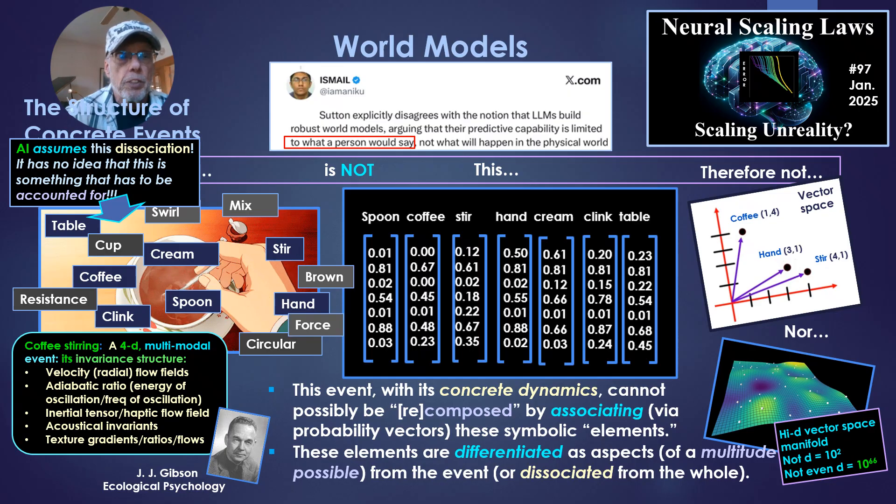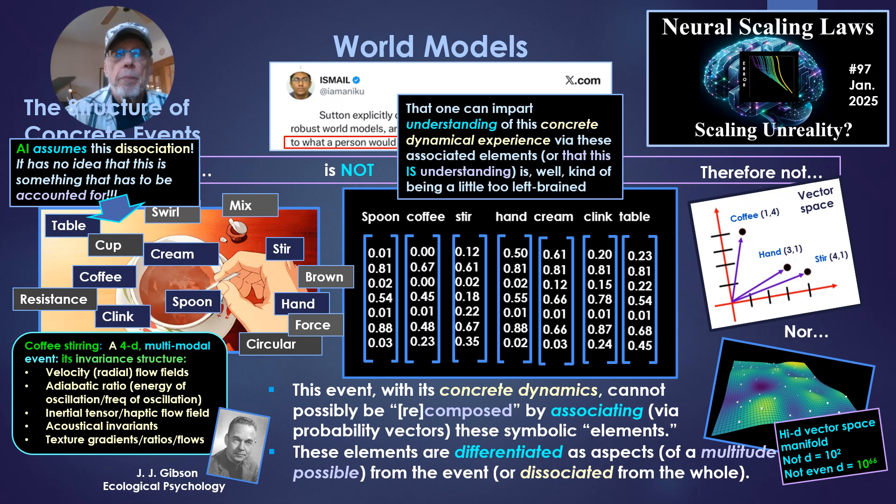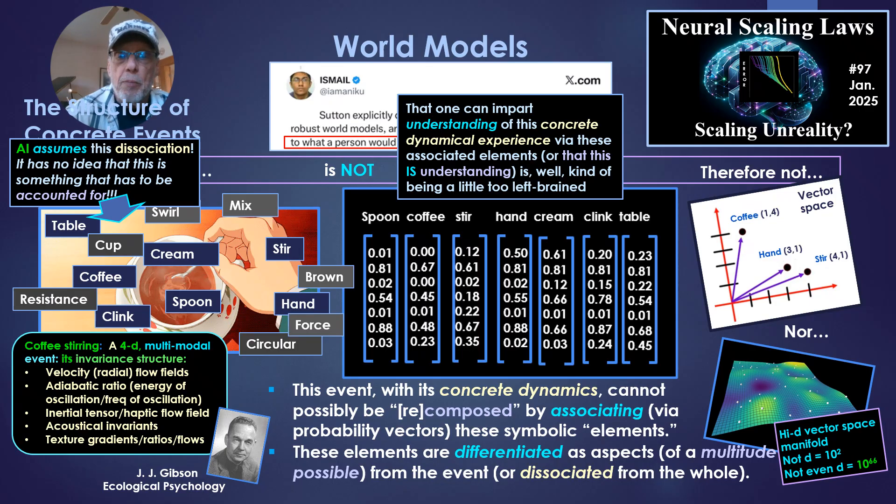AI assumes this association, this disassociation, I noted. It has no idea that this is something that has to be accounted for. And that one can impart understanding of this concrete dynamical experience via these associated elements. Or that this is understanding, as LLM people like to argue. Well, it's kind of, I'm just going to say, a little too left-brained.